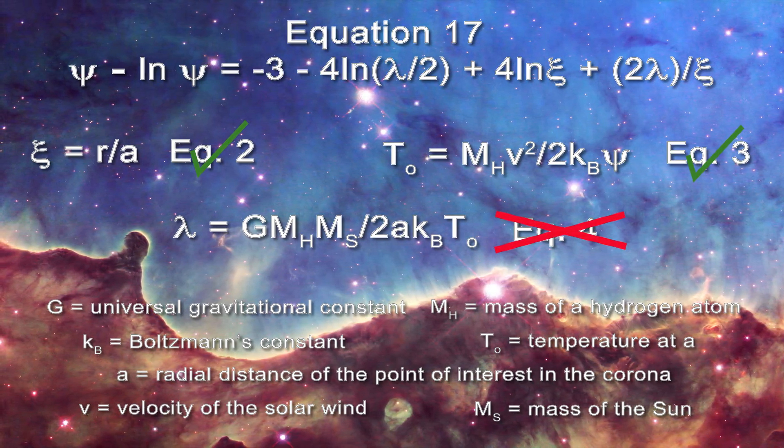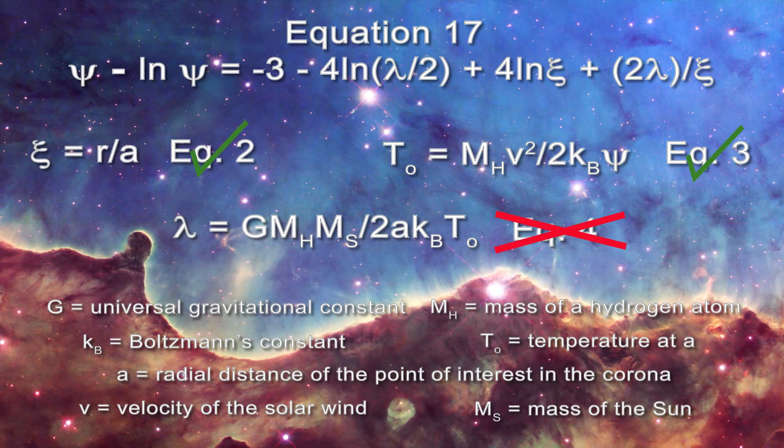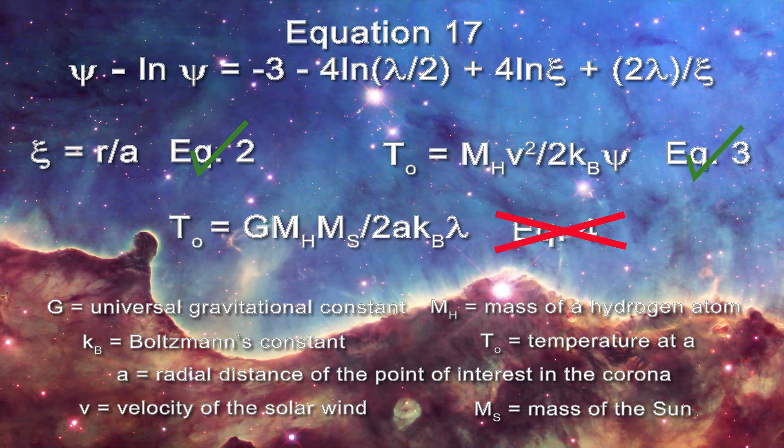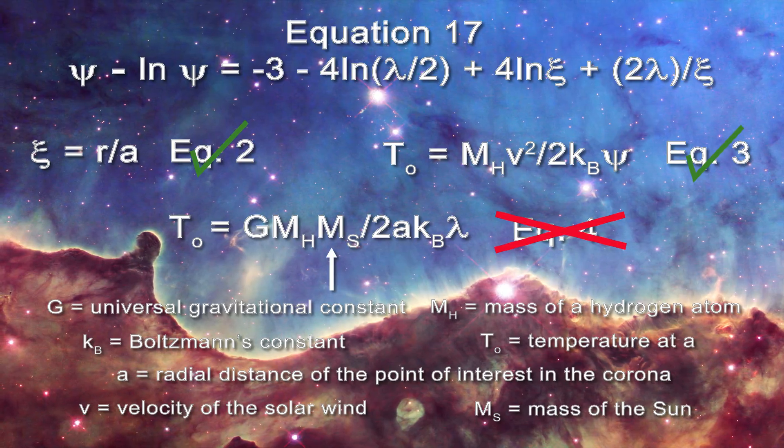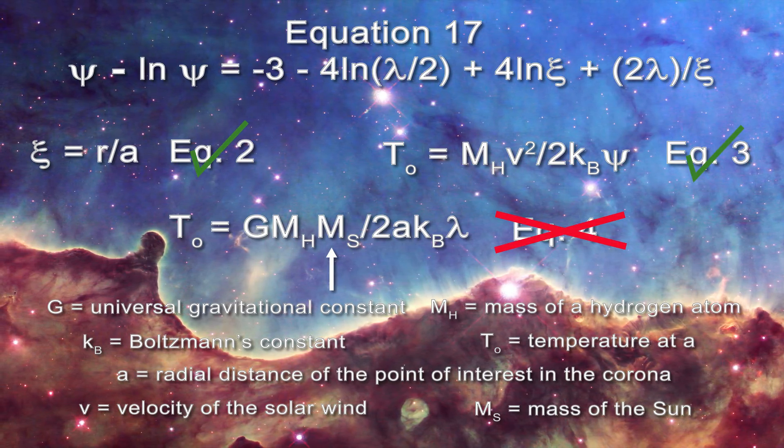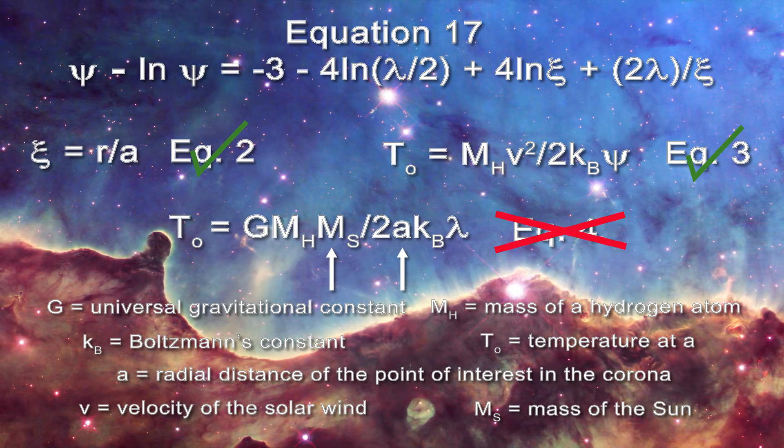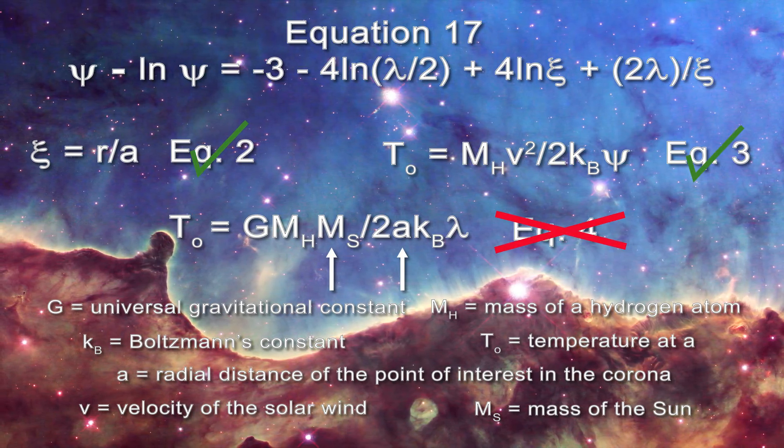Let us rearrange equation four such that the temperature is on the left. Now it can be seen that temperature, an intensive property, is being defined by the mass of the sun, an extensive property, and the radial location at the origin of the solar wind, a, which is a property which is neither intensive nor extensive.